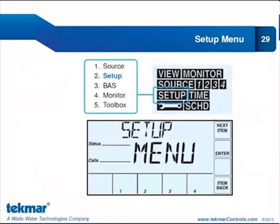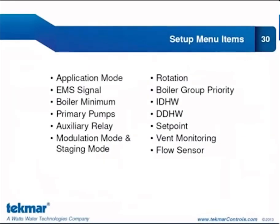Now we're coming to the setup menu, where the bulk of the system configuration takes place. The items we're going to cover are new to the 284: application mode, EMS signal, boiler minimum and how it applies only to boilers that need one, primary pump sequencing, auxiliary relay configuration, how we sequence modulating and on-off boilers and rotate each of those different boiler groups, indirect and dedicated domestic hot water, set point loads, vent monitoring, and the flow sensor.